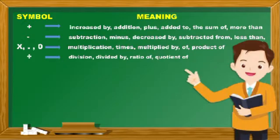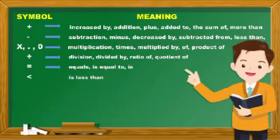means division, divided by, ratio of, quotient of. The fifth symbol means equals, is equal to, and is. The next symbol means is less than.